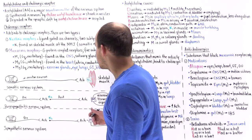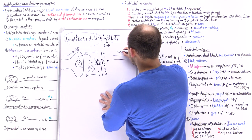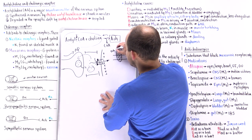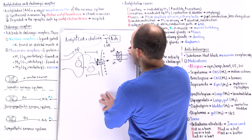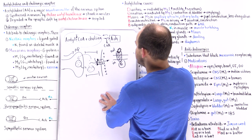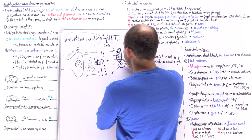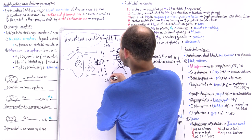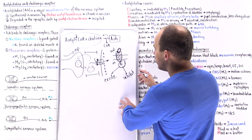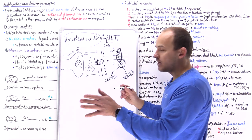Muscarinic receptors are G-protein-coupled receptors. Here we have a cell membrane with a transmembrane receptor — the outside has a pocket that binds acetylcholine, and on the inside we have a G-protein. When ACh binds, it creates a conformational change that activates the G-protein. Depending on what pathway it uses, the G-protein can either excite the cell or inhibit it. We either use the GQ pathway or the GI pathway, and we'll come back to this in just a moment.